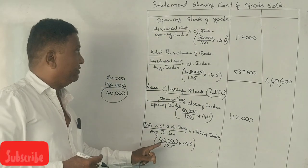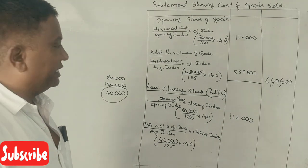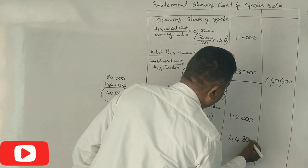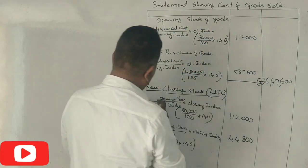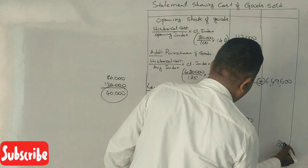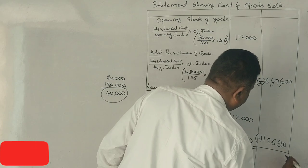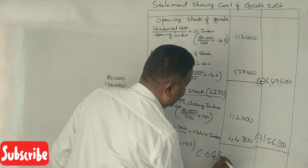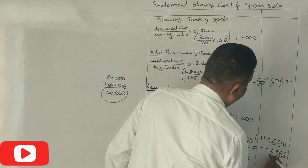The difference portion: 40,000 divided by 125 multiplied by 140 equals 44,800. This is a minus value — it will be subtracted. The total minus value gives cost of goods sold. 4,90,800 needs to be rechecked.